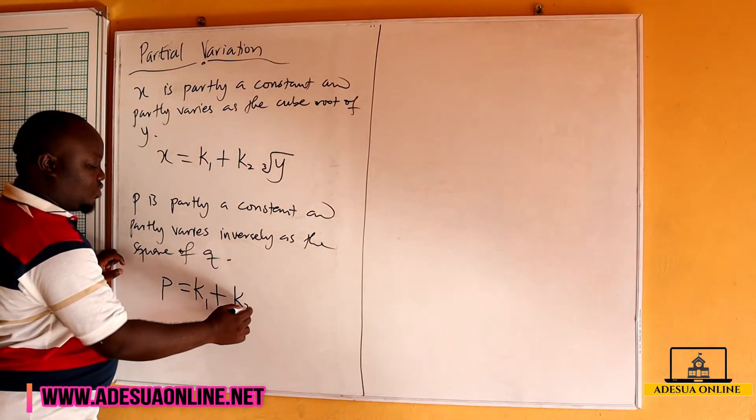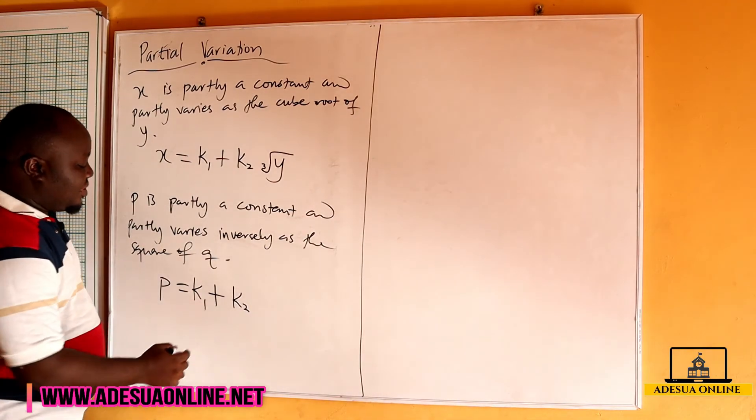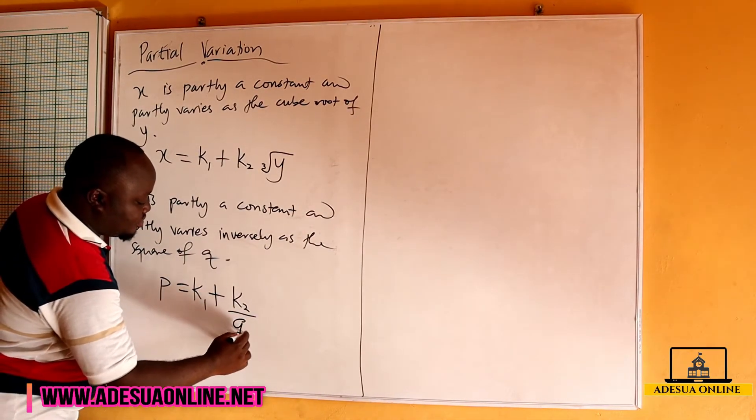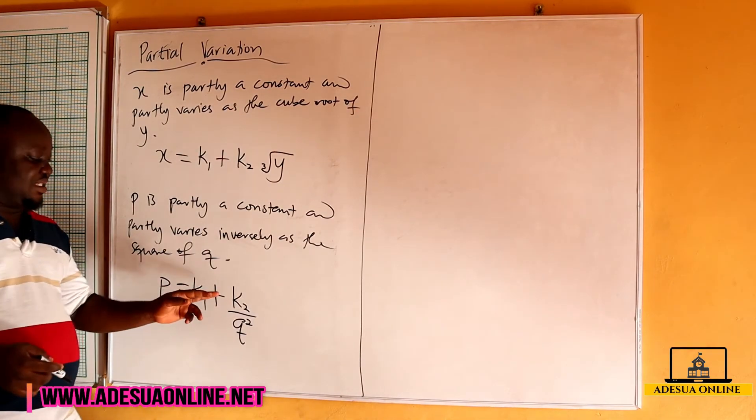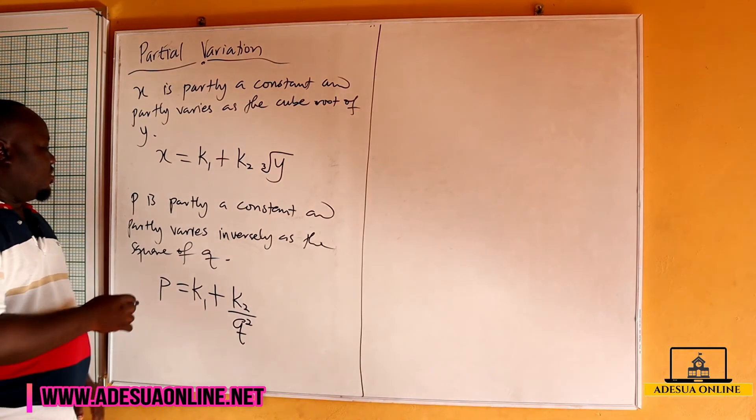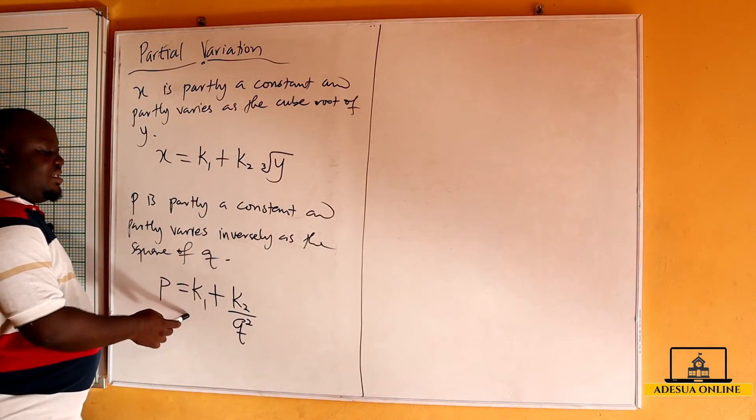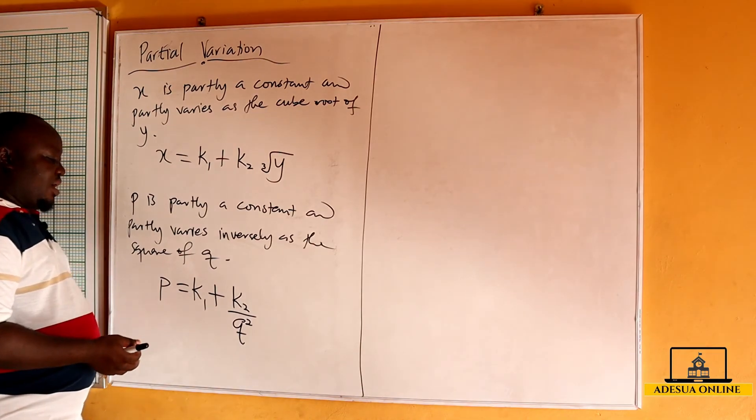So we have k2 inversely as the square of q. So because it is inversely, that's why I have divided by q raised to the power of two. So we have p is partly a constant and partly varies inversely as the square of q.